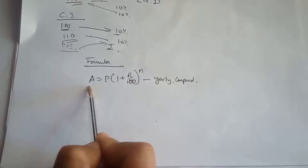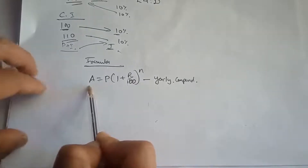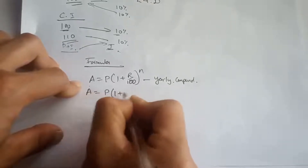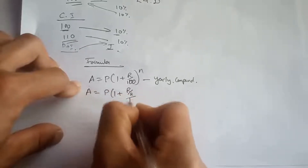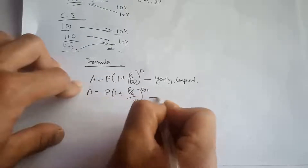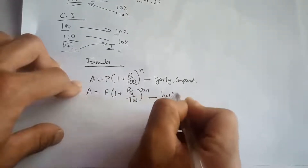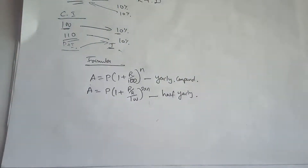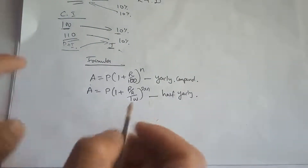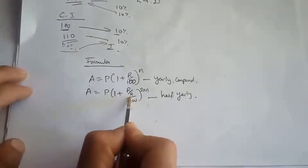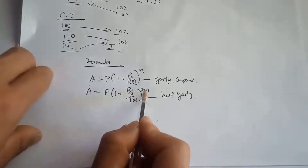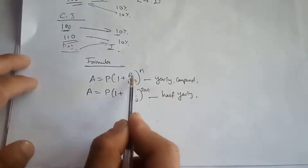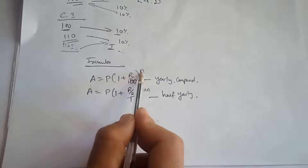N stands for number of years, R stands for rate of interest, P stands for principal amount, and A stands for amount — where amount includes both the interest and the principal. For half-yearly compounding: A equals P times 1 plus R over 200, raised to 2 times N.